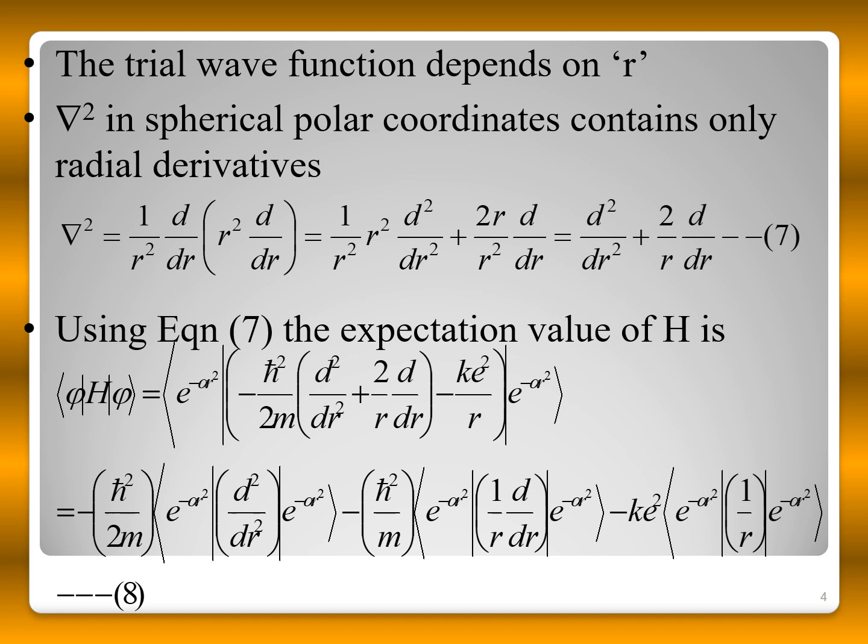Using this form of ∇², the expectation value of H is computed by placing the wave function and Hamiltonian in the integral. This breaks into three terms: the expectation value of d²/dr², the expectation value of (1/r) d/dr, and the expectation value of 1/r.